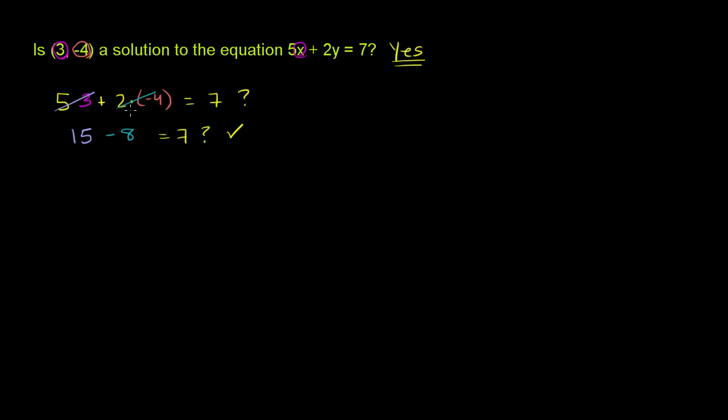But I also want to show you this way. We just did it by substitution. If we had the graph of this equation, we could also do it graphically. So let's give ourselves the graph of this equation, and I'll do that by setting up a table. There's multiple ways to graph this. You could put it in slope-intercept form and all of the rest, but I'll just set up a table of x and y values.